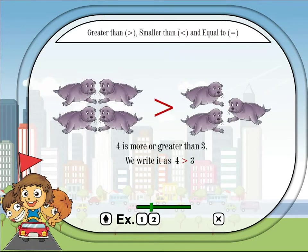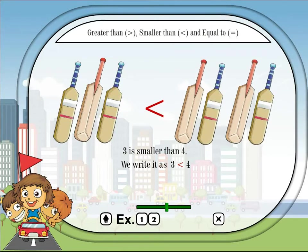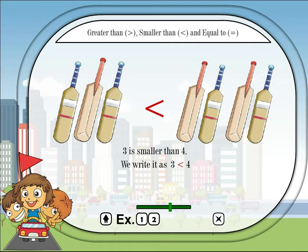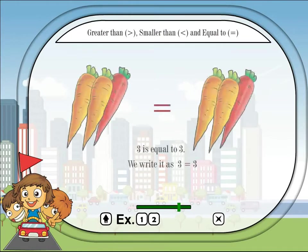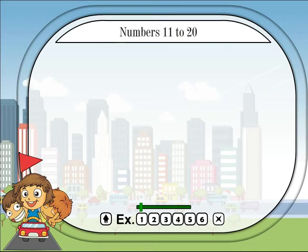Four is more or greater than three. We write it as: four is greater than three. Three is smaller than four. We write it as: three is less than four. Three is equal to three. We write it as: three is equal to three.